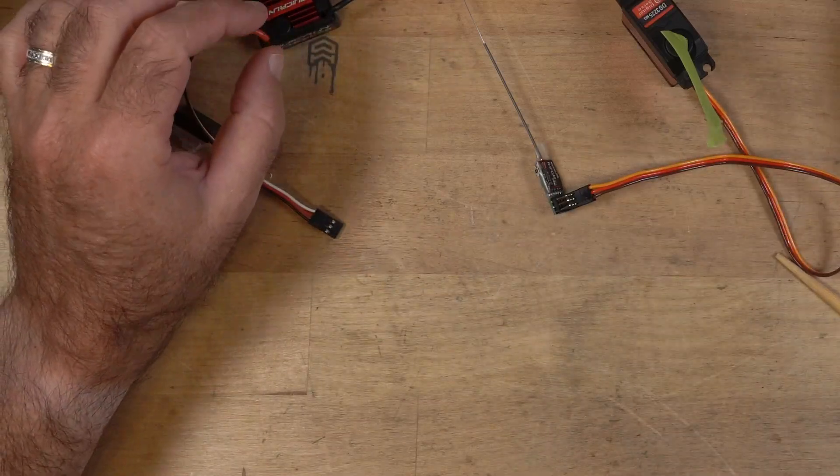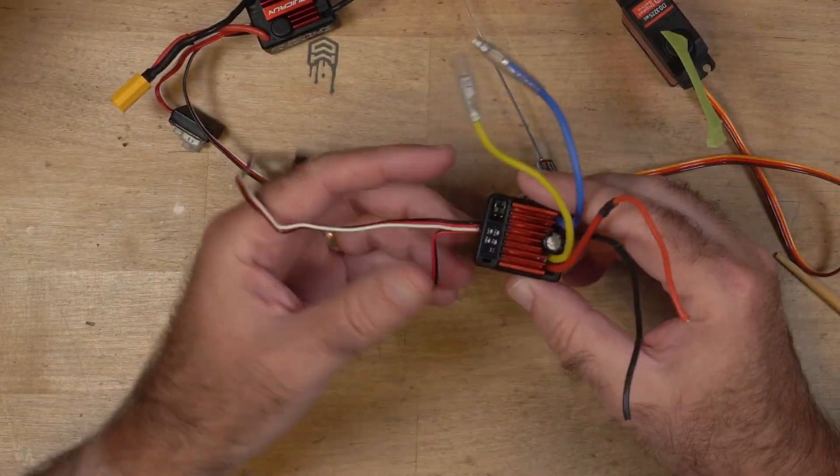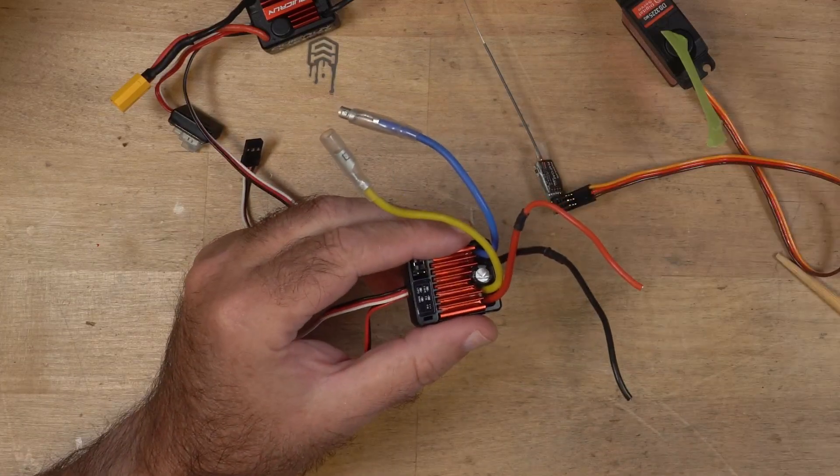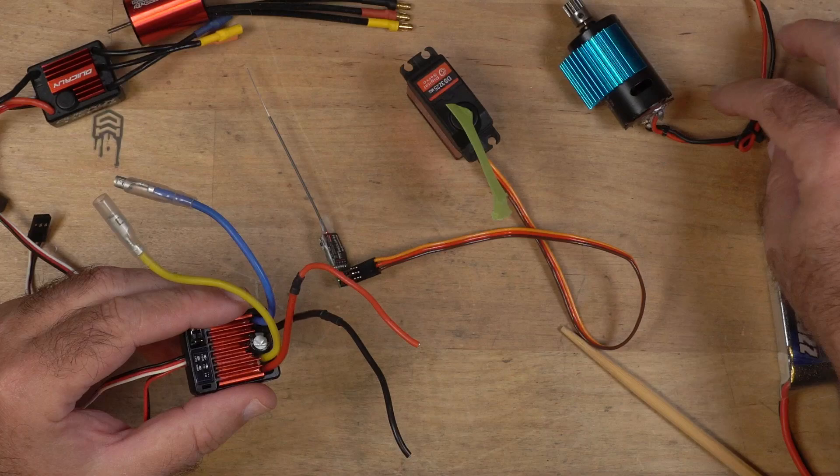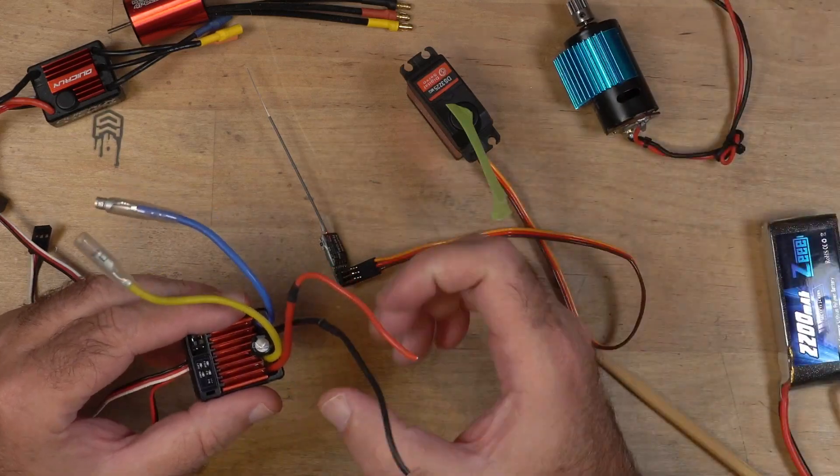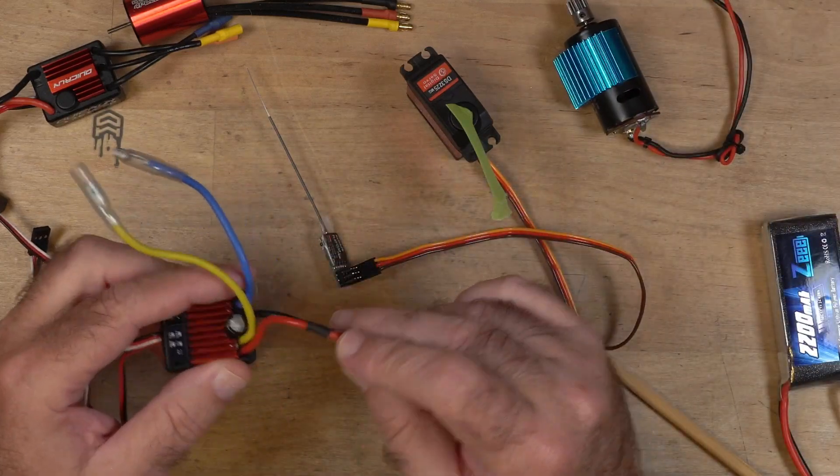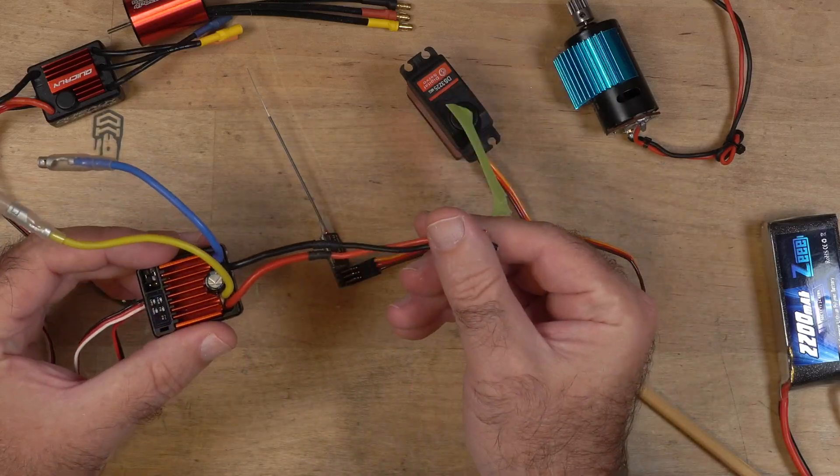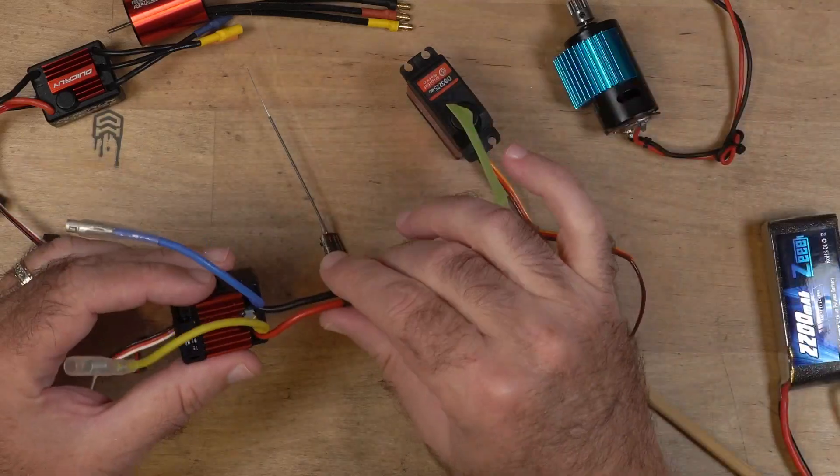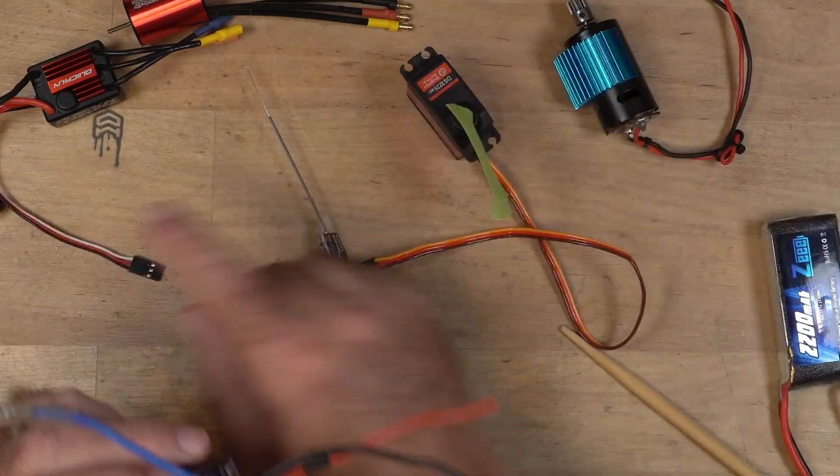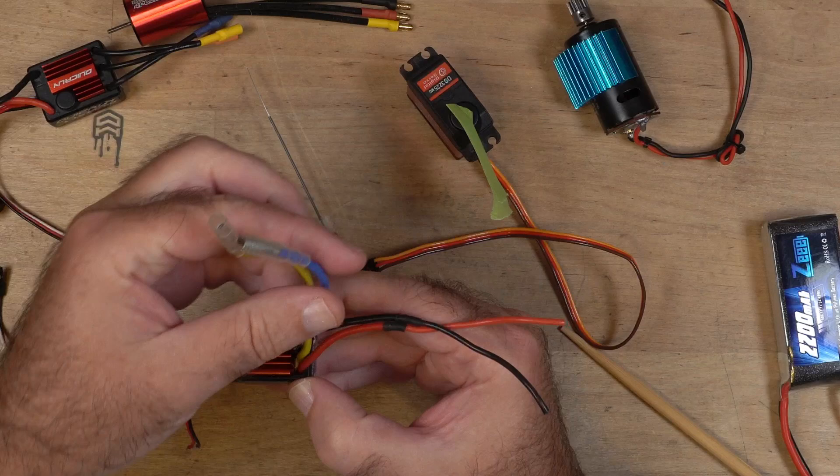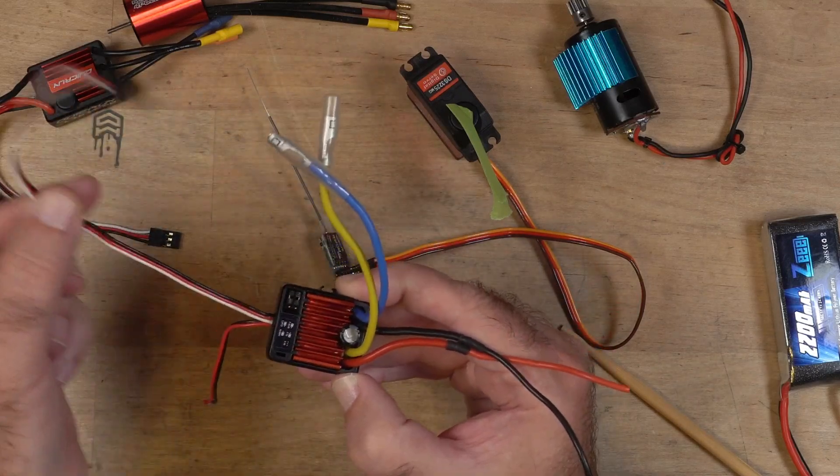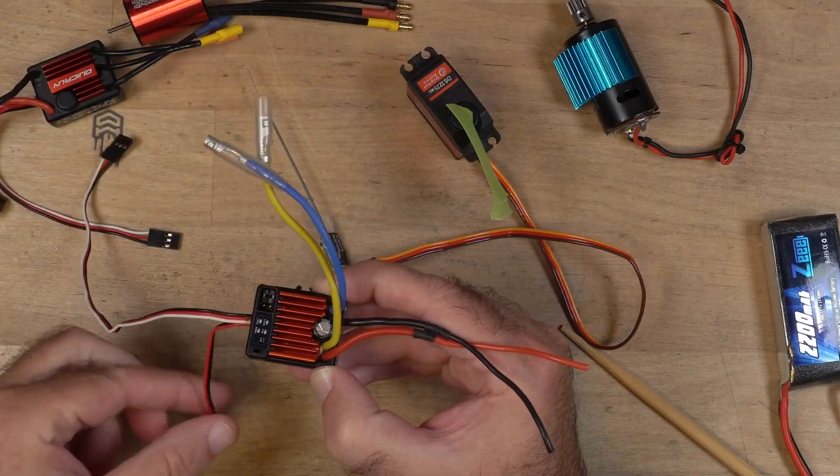The other type of speed control that are available, it looks the same, but they're not. This one's a little bit different. This is a brushed speed control for a brushed motor. A brushed motor has two wires that come off of it, not three. And so a brushed speed control will have two wires that will go to the battery plug. I've cut mine off because I'm not using it, but it will have a connection similar to that one on there. And then you'll have two connections that will go to the motor. You'll have your connection that goes to your receiver and then a connection that goes to a switch.